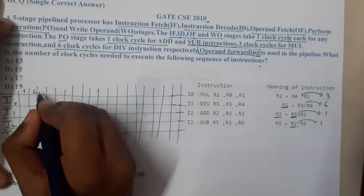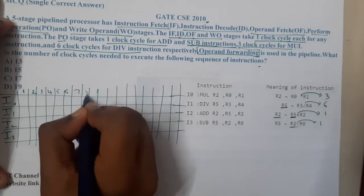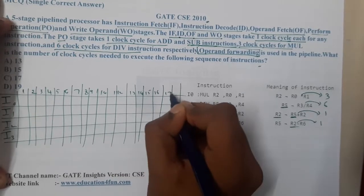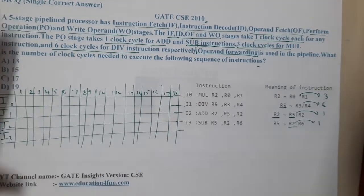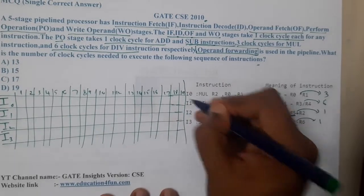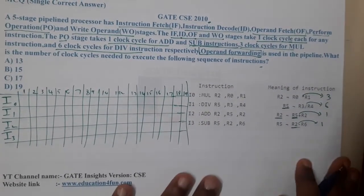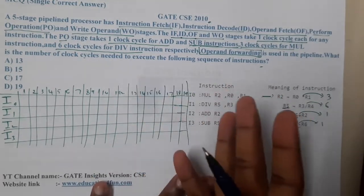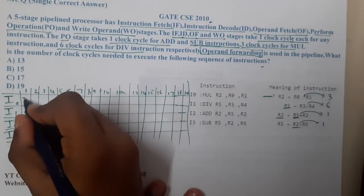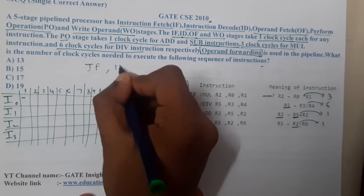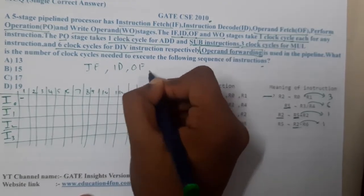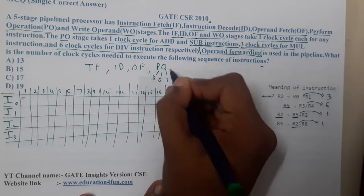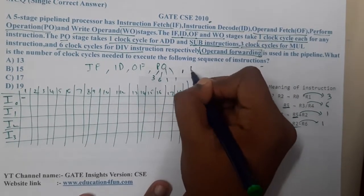Let's draw the pipeline table with clock cycles 1 through 19. I0 will never have any issue since there is no instruction above it. It proceeds through Instruction Fetch, Instruction Decode, Operand Fetch, then Perform Operation — which takes 3 clocks for multiplication — followed by Write Operation.